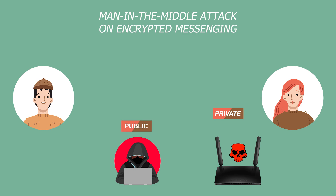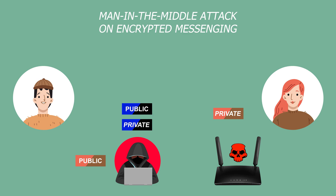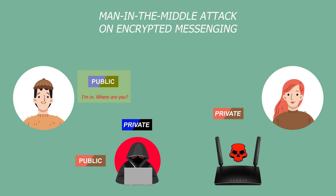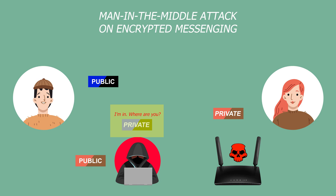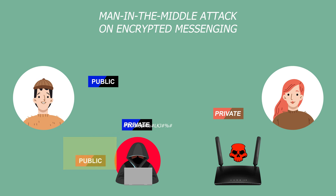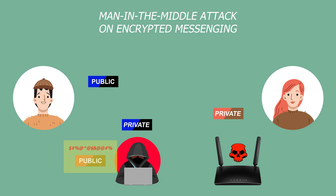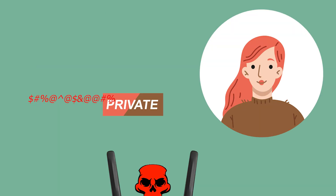Once the hacker obtains Linda's public key, he stores it for future use and generates a new pair of keys compatible with the messenger application that Boris and Linda use. He then sends the fake key to Boris. Boris's phone thinks it came from Linda and uses it to encrypt messages Boris sends to Linda. As the hacker has the matching private key, he can now intercept everything Boris sends. At this point, the hacker can do anything: he can re-encrypt the message with Linda's original public key and send it over to Linda so she doesn't get suspicious, or he can modify Boris's message before sending it to Linda, or he can write up a completely new message that Boris never posted, encrypt it with Linda's public key, and send it to unsuspecting Linda.